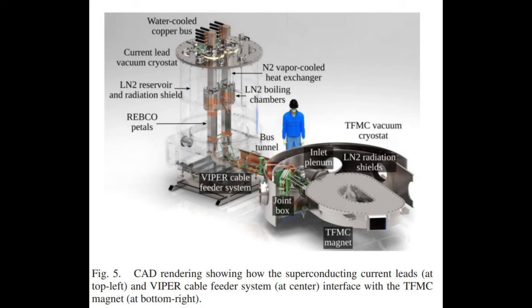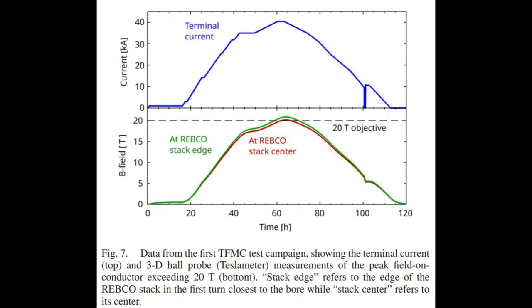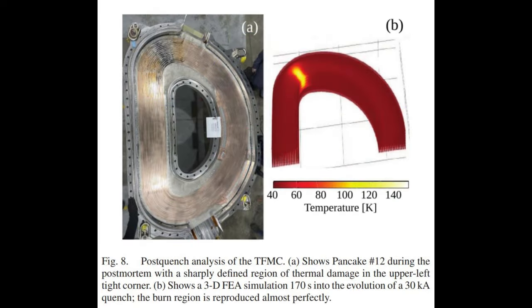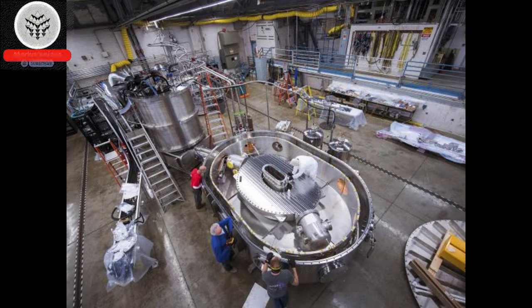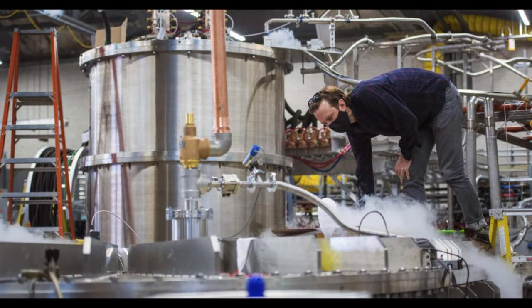However, previous fusion magnets have relied on a superconducting material that can only function at temperatures near absolute zero, minus 270 degrees Celsius or four kelvins. Fortunately, in recent years, a new material called rare earth barium copper oxide (REBCO) has been introduced to fusion magnets. This material allows the magnets to operate at a slightly higher temperature of 20 kelvins, which may not seem like a significant increase, but it offers significant advantages in terms of material properties and practical engineering.